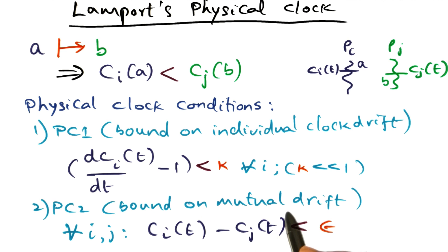What we're saying is, the mutual clock drift between any two nodes in the entire distributed system is bound by a small quantity epsilon.